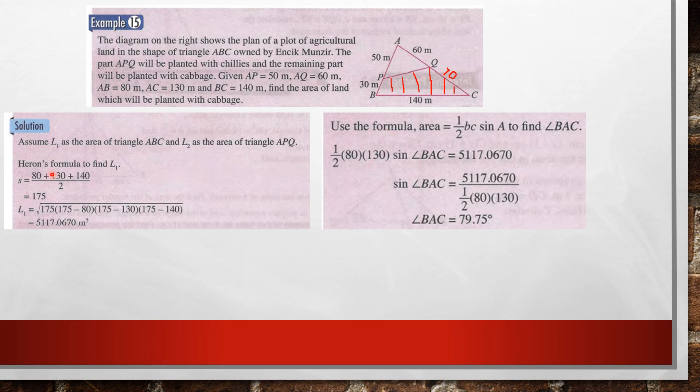So take notice you have two formulas for area. One is the Heron's formula, another one that you learned before Heron's formula, that is half BC sine A. So from here you solve, you will get the angle BAC, 79.75 degrees.